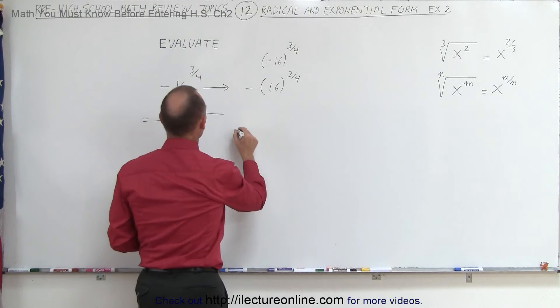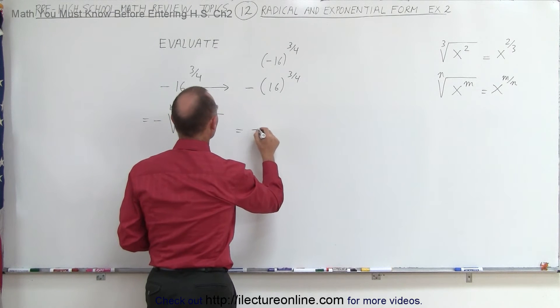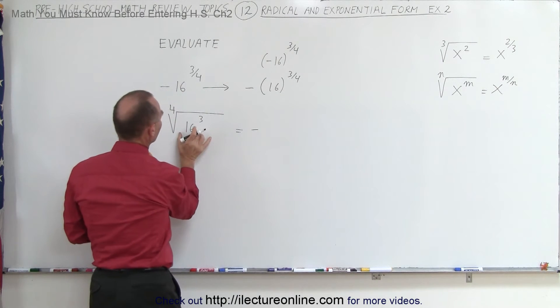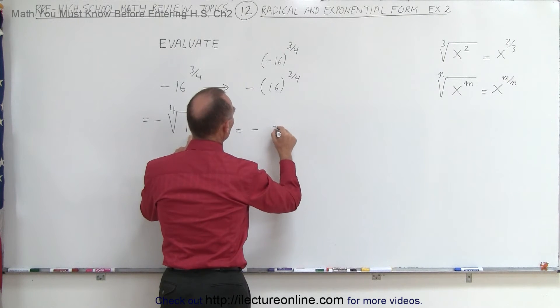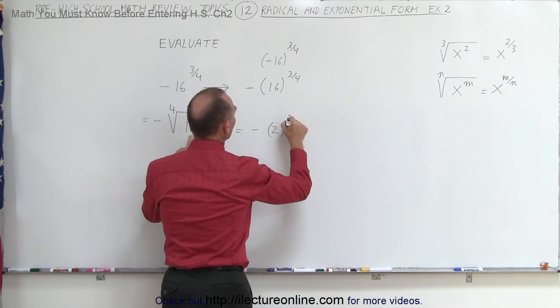So in other words, this is equal to negative, and what we can do is take the fourth root of this number. So this is going to be the fourth root of 16, which is 2, raised to the 3rd power.